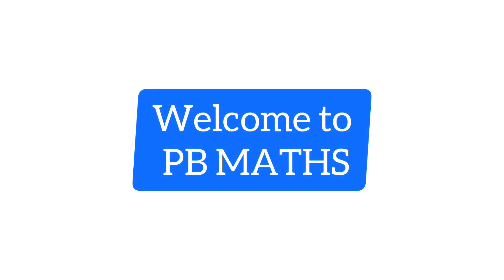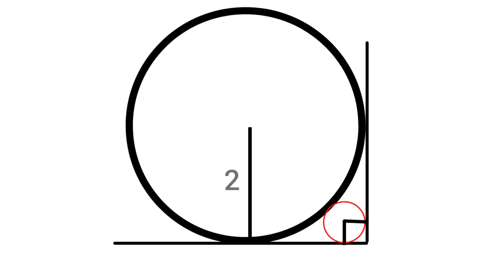Hello everyone, welcome to PB Maths. A circle with radius 2 cm is placed against a right angle. Another smaller circle is also placed as shown in the figure. Then what is the radius of smaller circle?